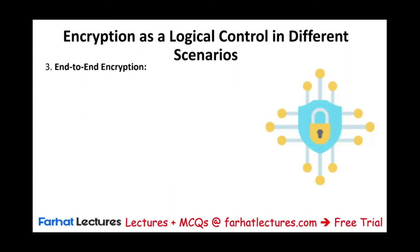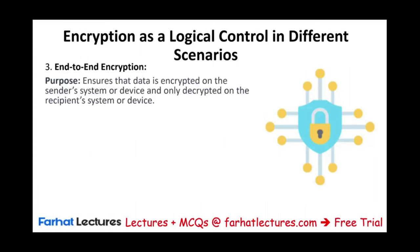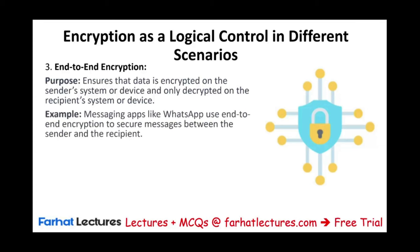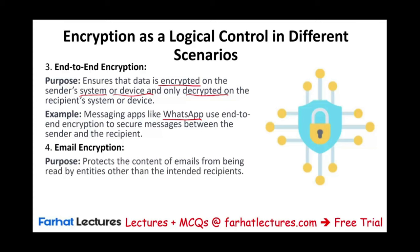We also have end-to-end encryption. For example, when you use WhatsApp, that's end-to-end encryption — data is encrypted on the sender's device and only decrypted on the recipient's device. If someone intercepted the message, it would be coded and unreadable. Email encryption follows the same concept — the purpose is to protect the content of emails from being read by entities other than the intended recipient.